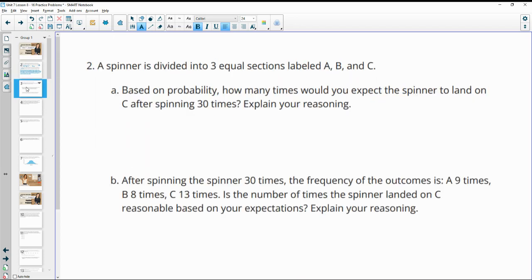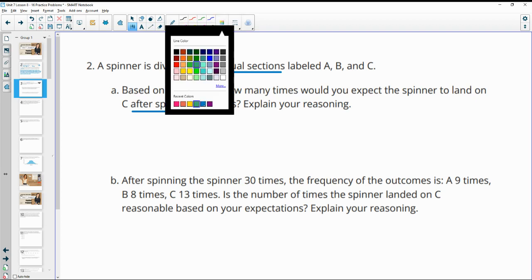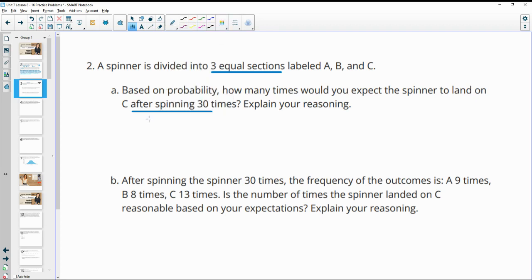Number two, a spinner is divided into three equal sections, A, B, and C. Based on the probability, how many times would you expect the spinner to land on C after 30 spins? We've got three equal sections, so our expected probability would be that we would land on C one out of three times. So one third of 30 is 10 times.